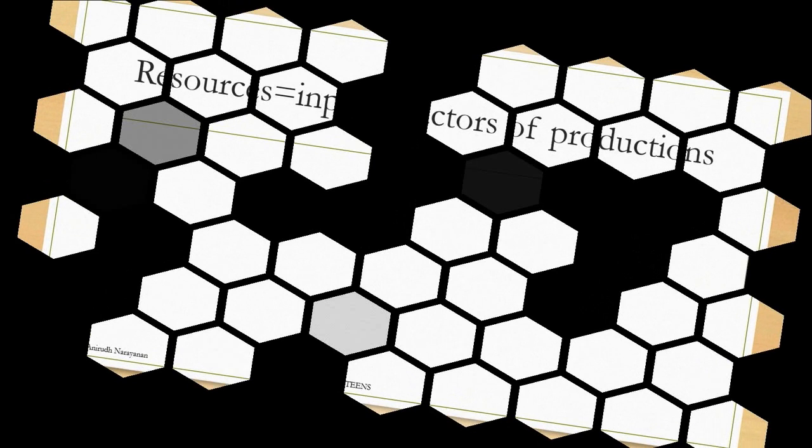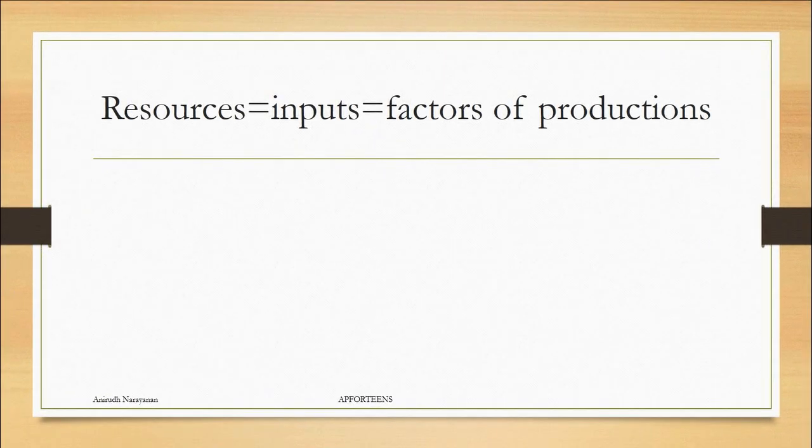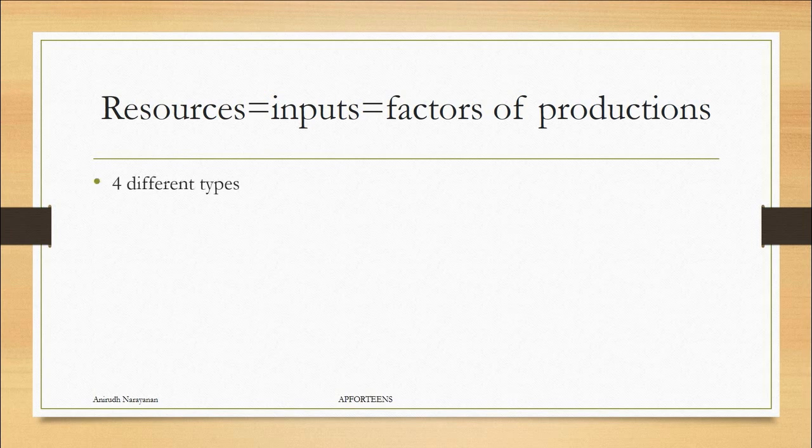Now the resources are equivalent to inputs or factors of production. You're going to see those switched around. They're basically the same thing. Now there are four major types of resources and this is my interpretation of it. Some people have different ways of explaining it. I personally put it as four different types of resources: land, labor, capital, and entrepreneurial ability or entrepreneurship.